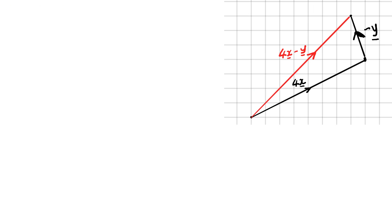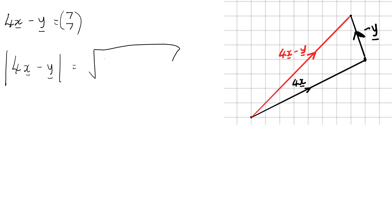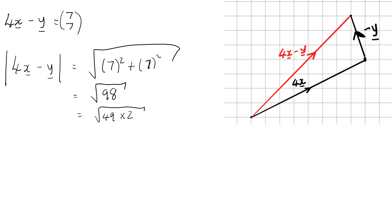Let's write down what 4x minus y is in component form. We started here, went 7 along and 7 up, so our vector is (7, 7). To find the magnitude: √(7² + 7²) = √98 = √(49 × 2) = 7√2. So this vector has length 7√2.